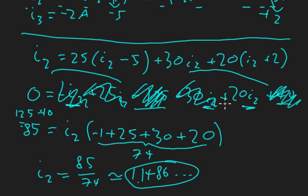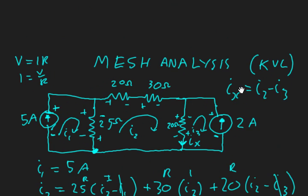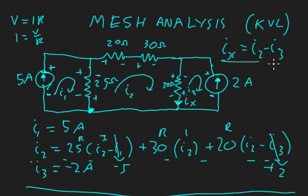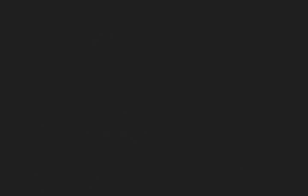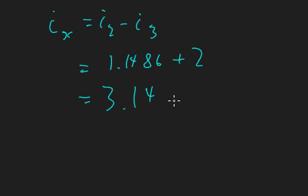Okay so that gives us I2. We know I2 and I3 which was negative 2. In our initial problem we wanted to solve for Ix which is equal to I2 minus I3. So after having found those two values, we get Ix equals I2 minus I3 equals 1.1486 minus negative 2 which gives plus 2, and that equals 3.1486.